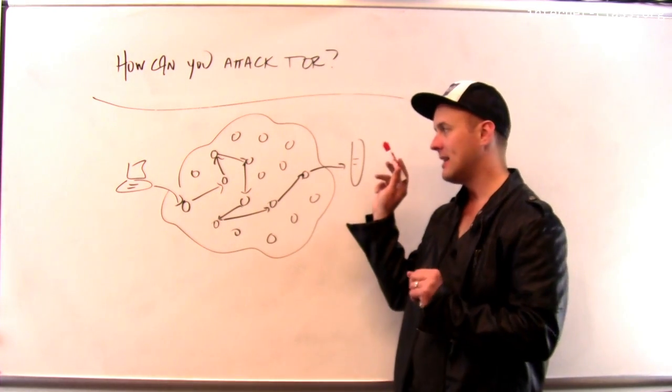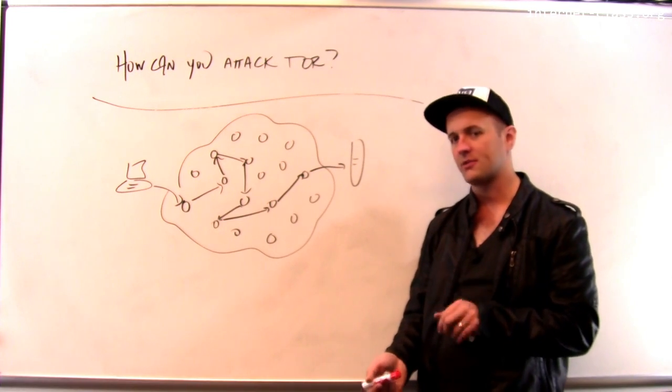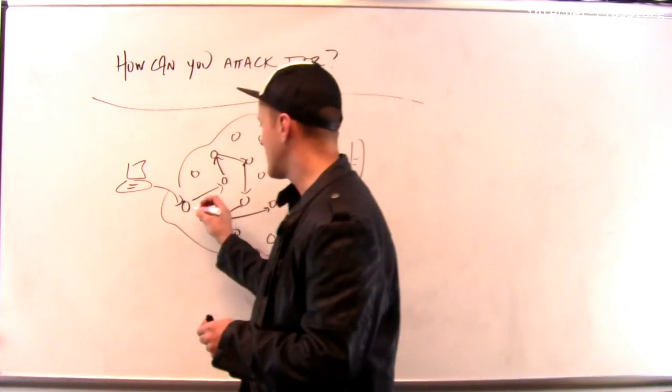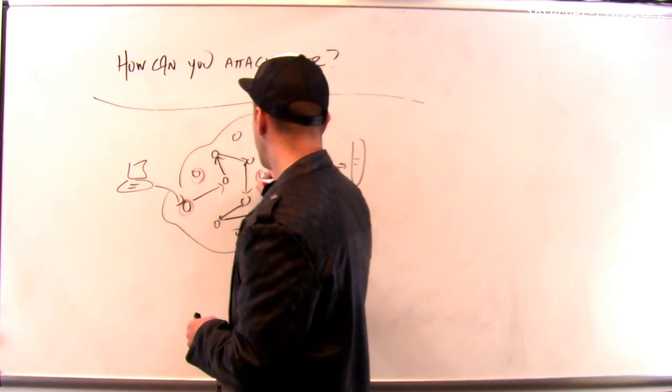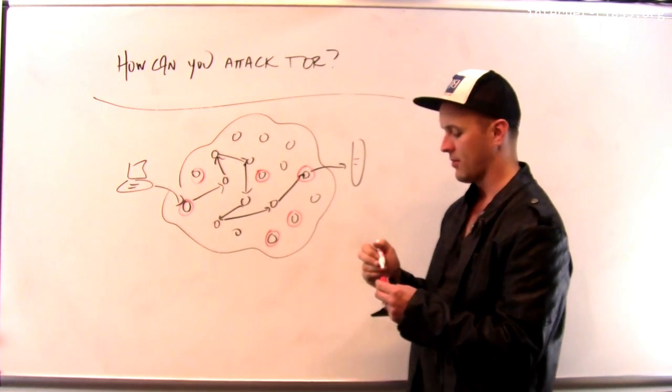And this is what these attackers actually were able to do. Let's say that I have this number of nodes, but some of these start to be taken over by attackers. So the attacker takes control of some percentage of the Tor network.